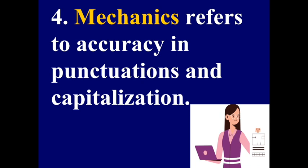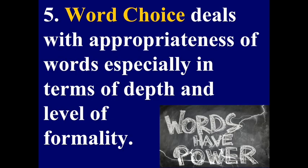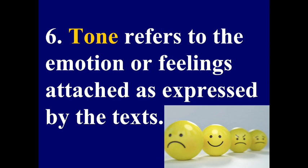Number four, mechanics. It refers to accuracy in punctuation and capitalization. Number five, word choice. It deals with appropriateness of words, especially in terms of depth and level of formality. Number six, tone. It refers to the emotion or feelings attached as expressed by the text.